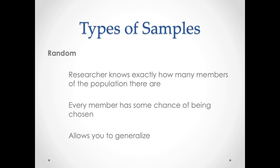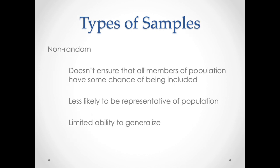Generalizability — the capacity for us to say that our sample speaks to the population of interest — is intimately intertwined with gathering a random sample. In order to claim that your sample represents the population of interest, it has to be a random sample where every member of that population of interest has a known non-zero probability of selection. Not all samples are random samples, and sometimes random samples are relatively unrealistic.